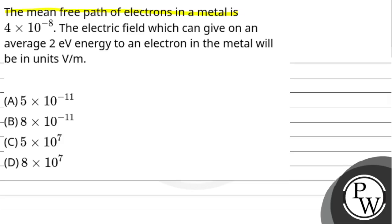The mean free path of electrons in a metal is 4 into 10 to the power of minus 8. The electric field which can give on an average 2 electron volt energy to an electron in the metal will be in units volt per meter.